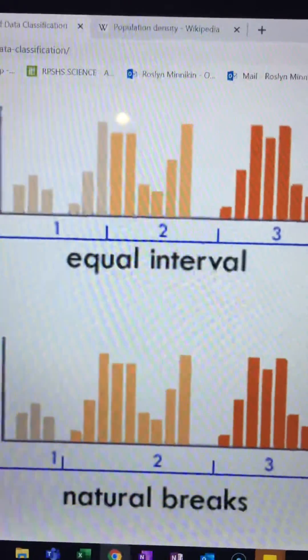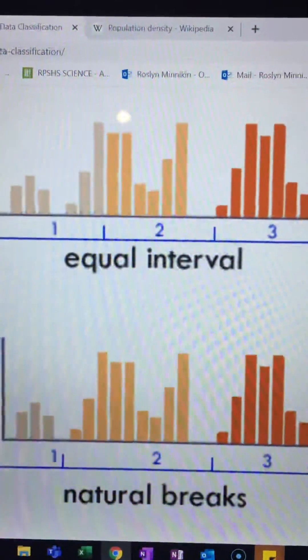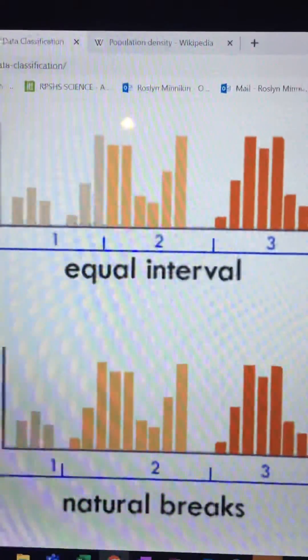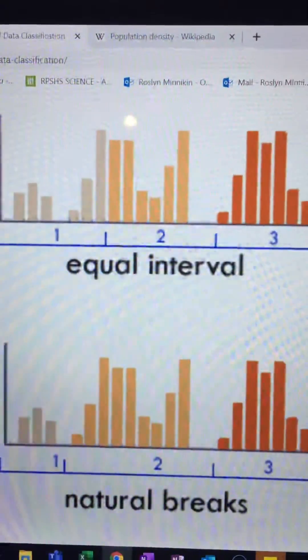For example, if you're looking at population densities in northern African nations, these might be your natural breaks. But once you then started to extend it down and look at sub-Saharan African nations, those natural breaks may not necessarily apply.